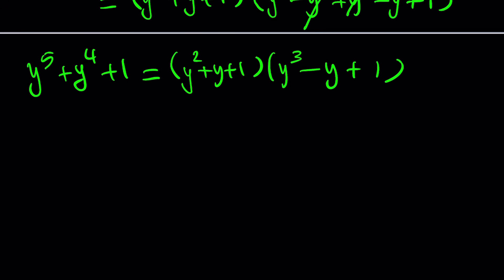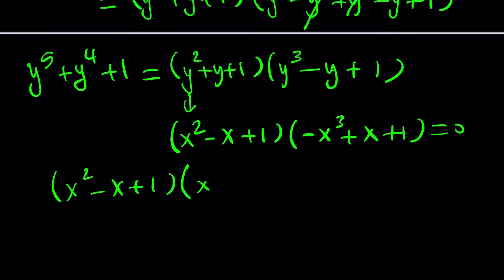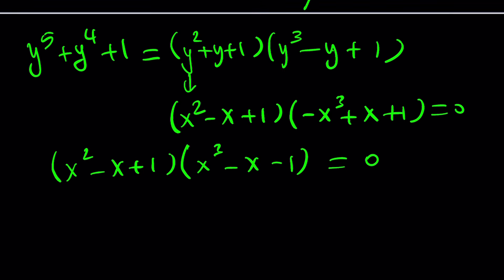After replacing y with negative x, the quadratic factor is unchanged in structure, giving x squared minus x plus one. And the cubic factor gives negative x cubed plus x plus one, or equivalently you can negate both sides to write x squared minus x plus one times x cubed minus x minus one. Substitution makes this a lot easier, and this form is easier to recognize as factorable.